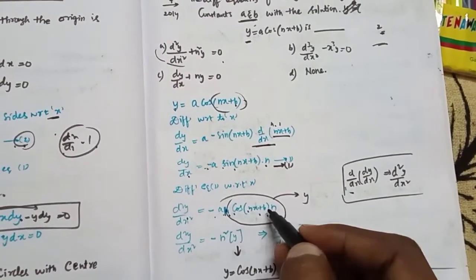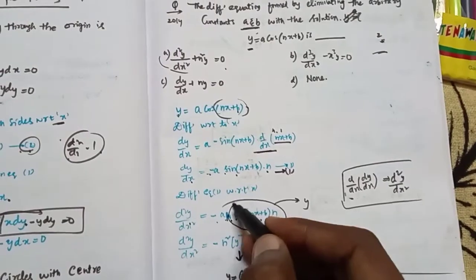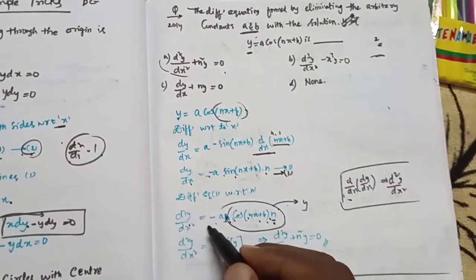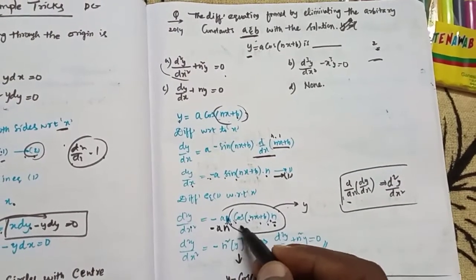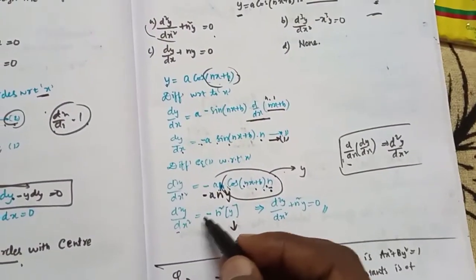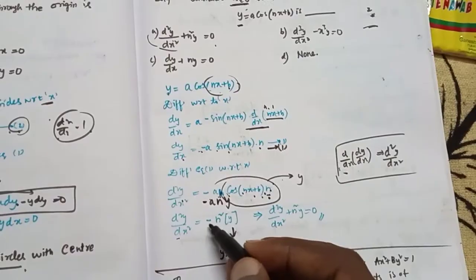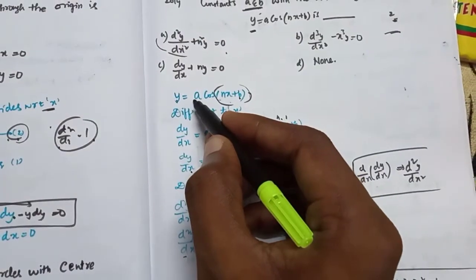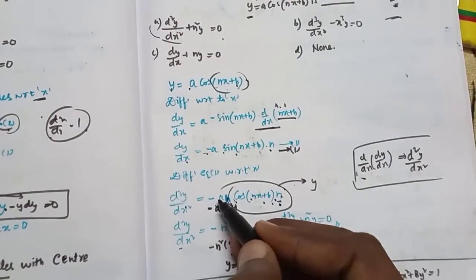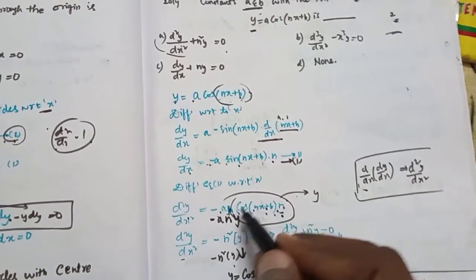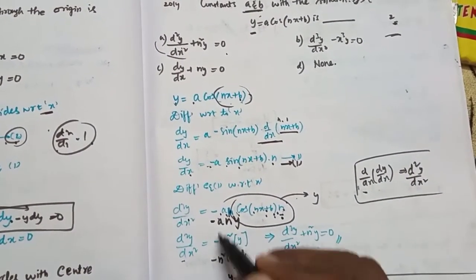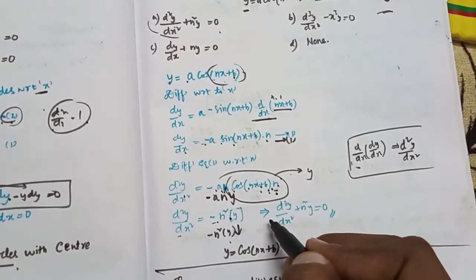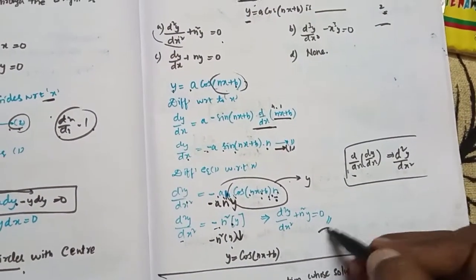Now, since y equals a·cos(nx + b), we can substitute: d²y/dx² equals minus n²·y. Therefore, d²y/dx² plus n²y is equal to 0. This is the answer. It is very simple.